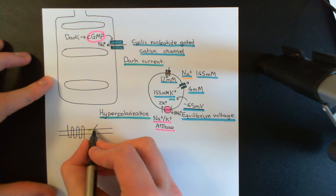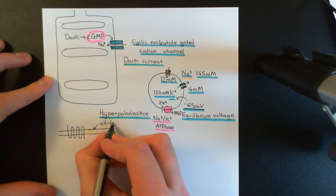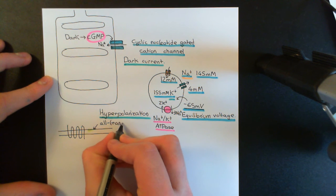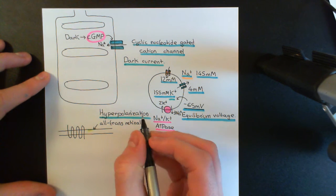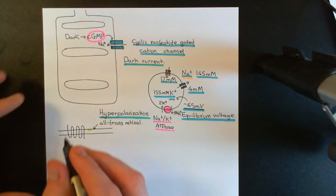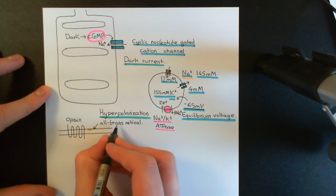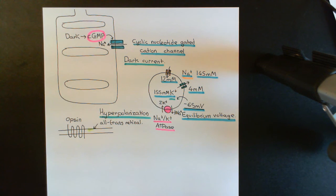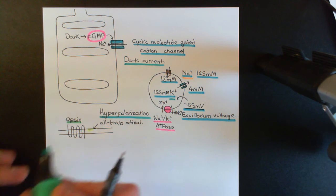So this yellow blob is supposed to represent the all-trans-retinal molecule. The question is then, how do we actually regenerate the rhodopsin receptor? We need to turn the all-trans-retinal back into the 11-cis-retinal and we need to rebind that to the opsin G-protein coupled receptor. So how does that actually occur?